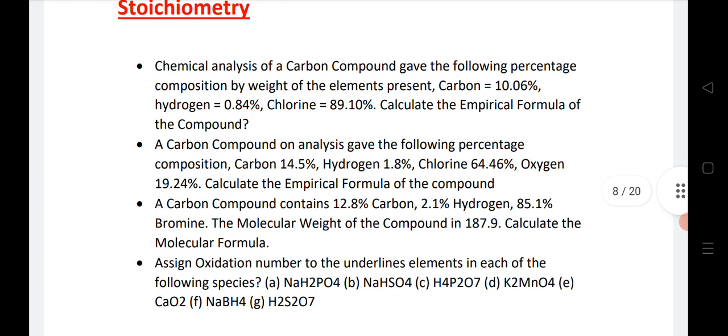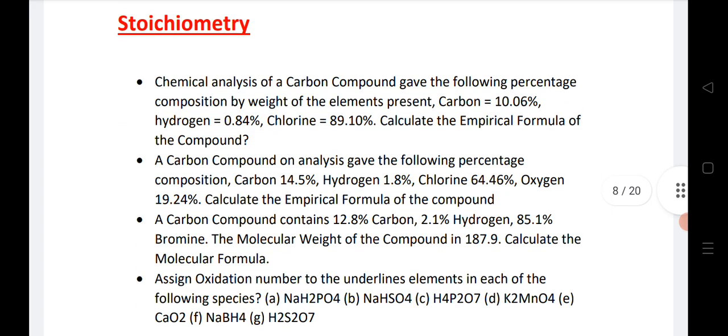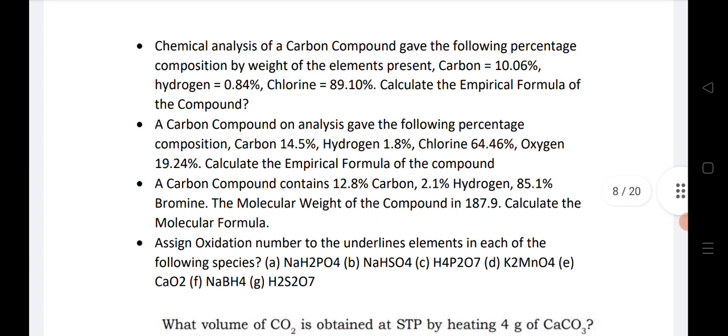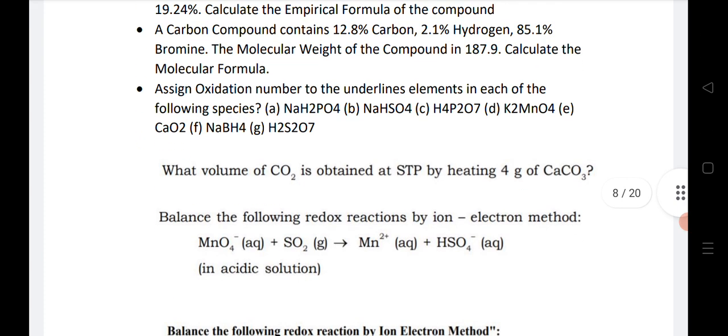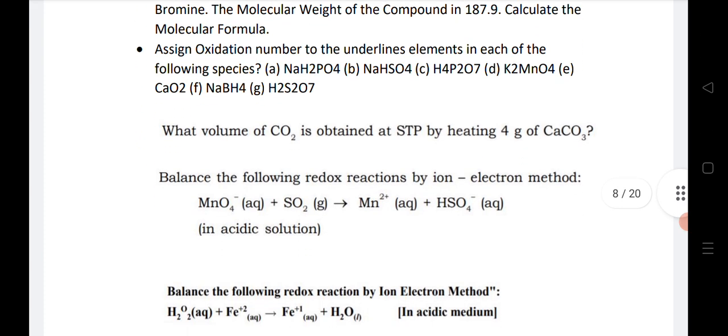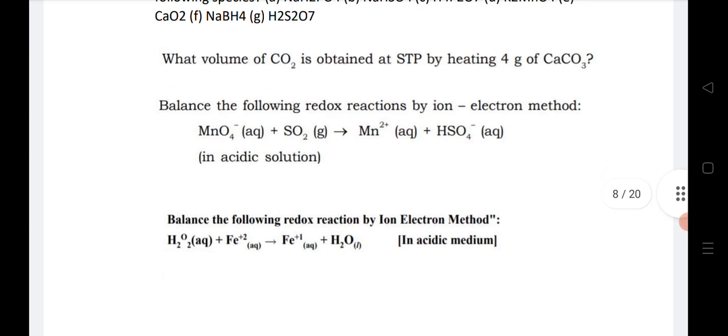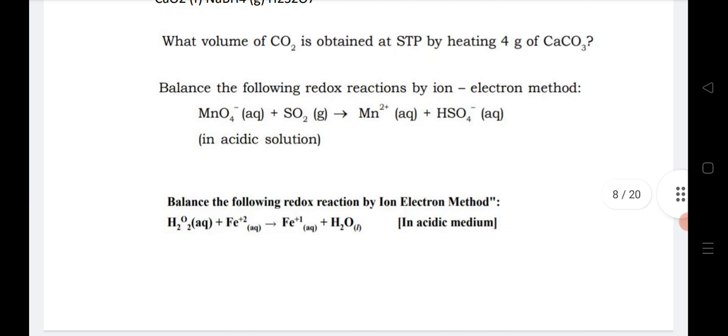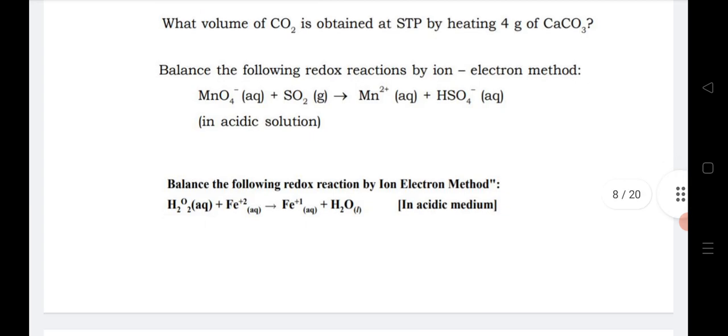Next stoichiometry, we know that the numericals are very important of stoichiometry to calculate empirical formula, molecular formula, oxidation numbers, and the last one is what volume of CO2 is obtained at STP by heating 4 grams of calcium carbonate and balancing redox reaction using acidic medium and acidic solution.